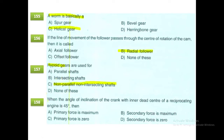When the angle of inclination of the crank with the inner dead center of a reciprocating engine is 45 degrees, the secondary force is 0. So the option is D, secondary force is 0.